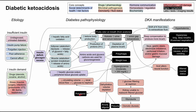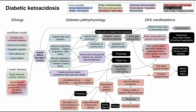Dehydration also causes polydipsia: volume depletion leads to hyperosmolarity, which stimulates osmoreceptors in the hypothalamus, driving thirst. Additionally, dehydration results in cerebral hypoperfusion, contributing to altered mental status in DKA. Finally, dehydration and volume depletion cause osmotic shifts in the brain, which can result in cerebral ischemia and blood-brain barrier destruction. This inflammatory cell damage process leads to cerebral edema, another cause of altered mental status in DKA.